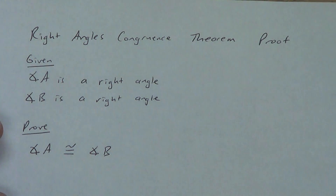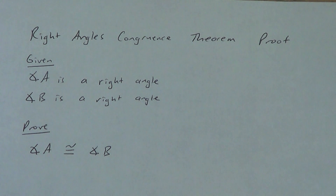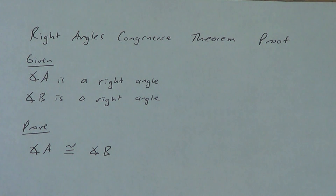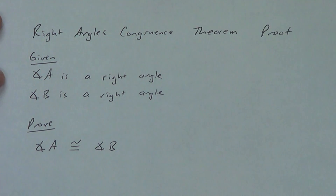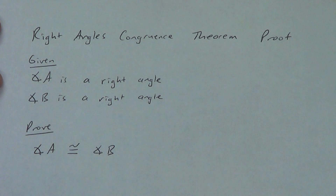Back at it with Lesson 7. We're on Part 2 now. In Part 2, we're going to do two proofs. We're going to prove that the Right Angles Congruence Theorem works, and then we're also going to prove that the Vertical Angle Theorem works. We're going to talk more about the Congruence Supplements Theorem and Congruent Complements Theorem in class, so just add these into your notes and let's get moving.